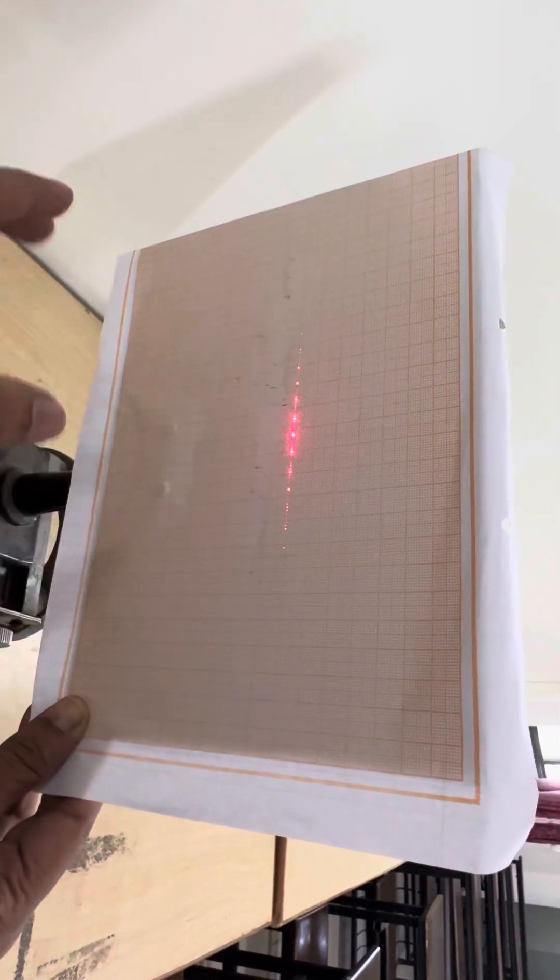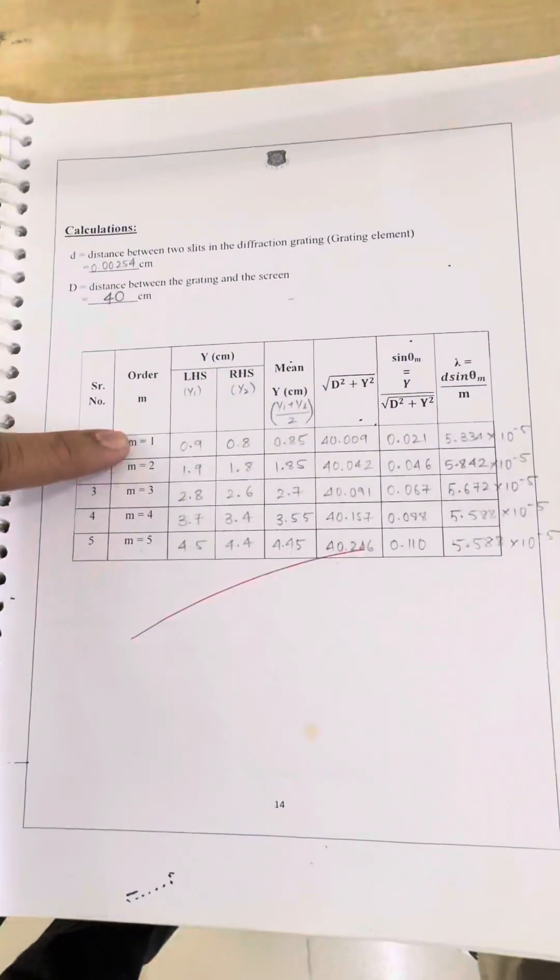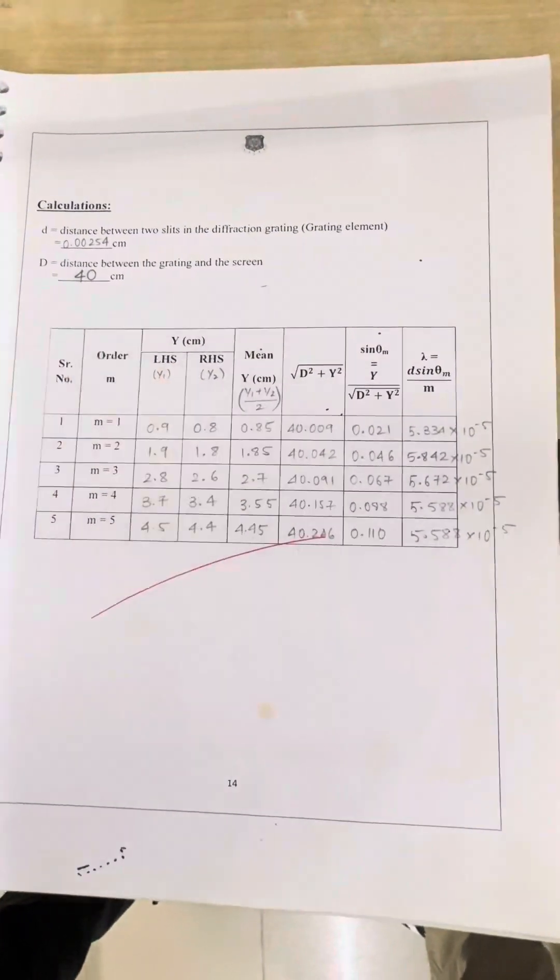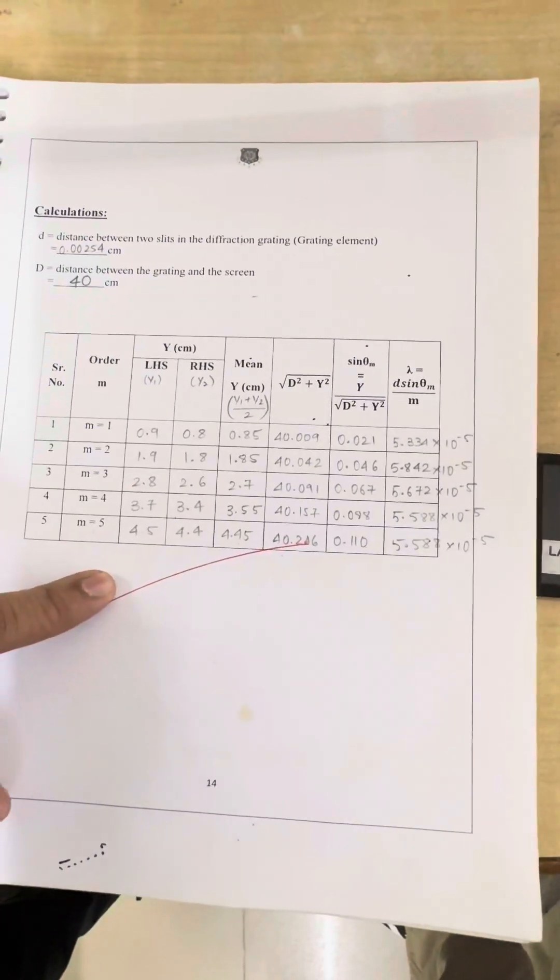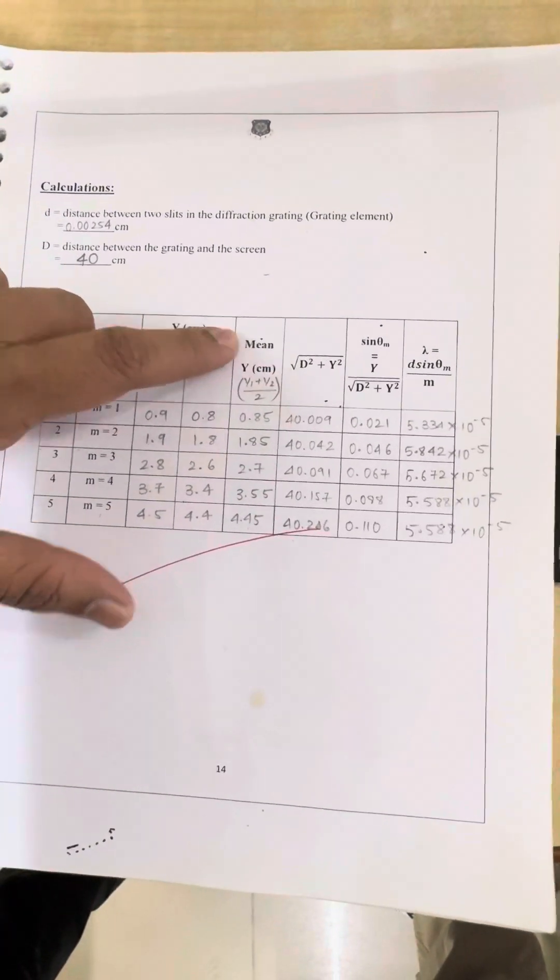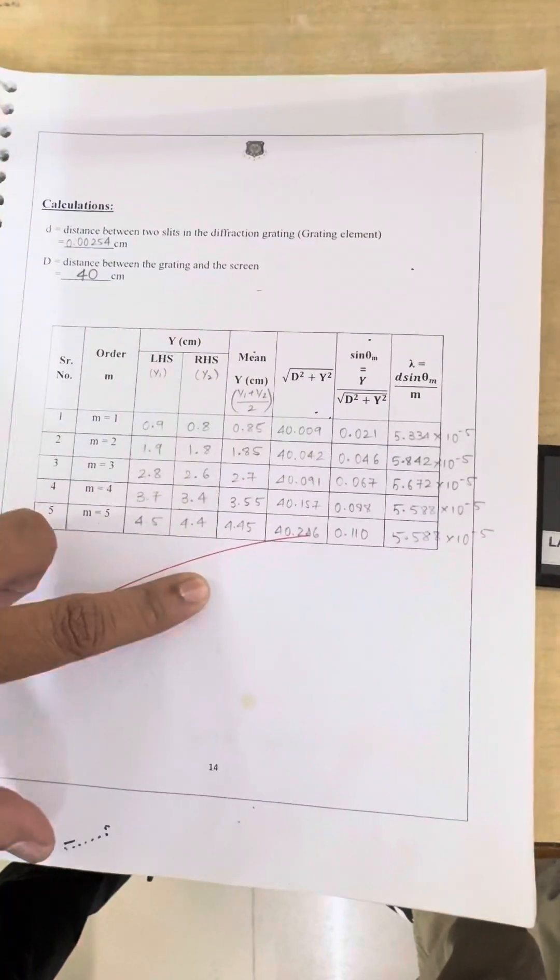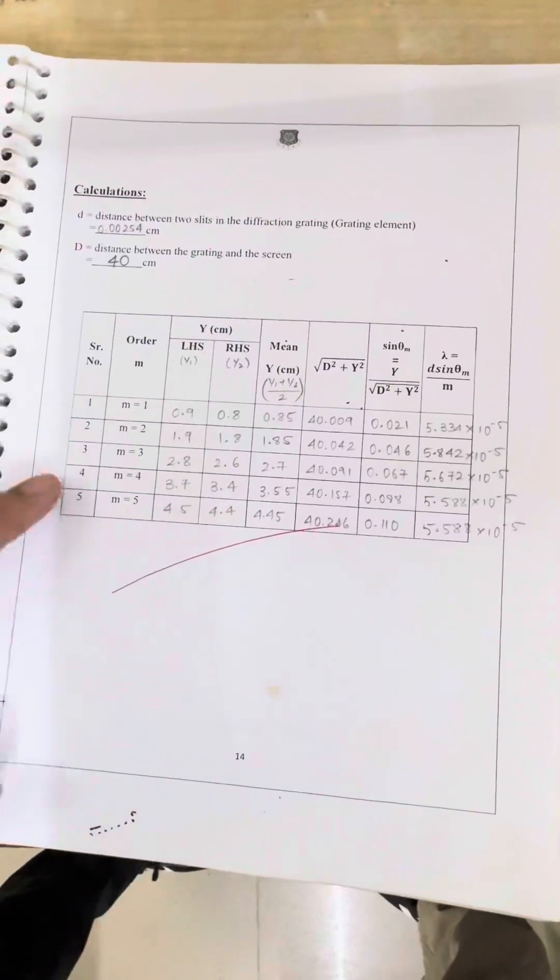And similarly, we will repeat the practical where you can see the maxima and minima. That we will write in the observation table. So for the first order, LHS distance to RHS distance, then we have found the mean. Mean is y1 plus y2 by 2. So we get all the mean values.